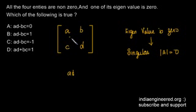...ad minus bc. So this is equal to 0. So obviously option A is the correct option. When one of its eigenvalues is 0, then the matrix is obviously singular.